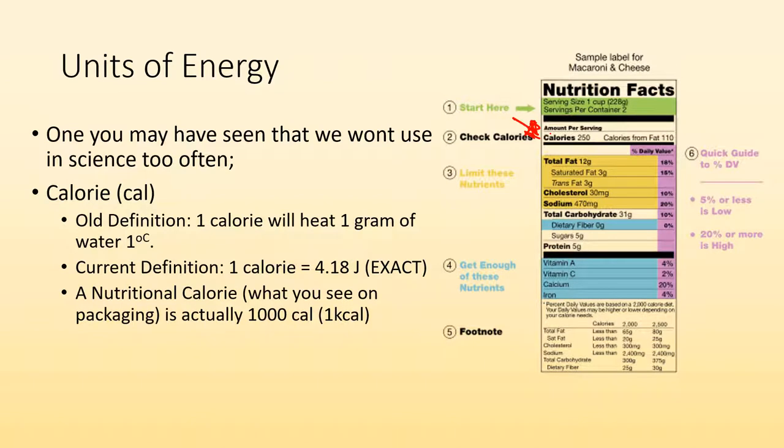Then there's also the nutritional calorie, which is what you're actually seeing on labels. It's actually 1,000 normal calories. So this capital C is important. The capital C is saying it's 1,000 calories. So one calorie with a capital C is equal to 1,000 calories with a lowercase c. And the abbreviation is one capital C-A-L is equal to 1,000 lowercase c-a-l. Yeah, our system of measurement's great. Just uppercase, lowercase, totally different things.